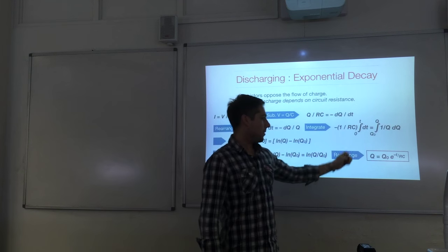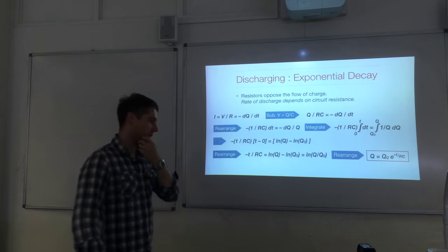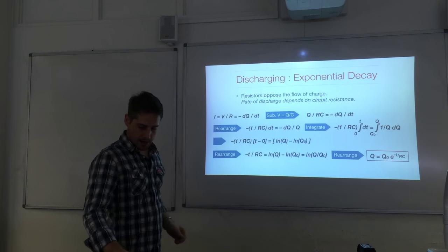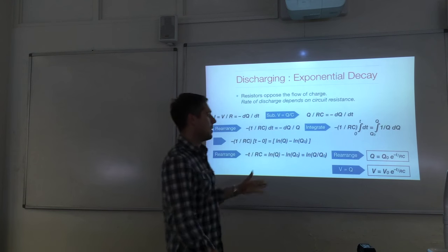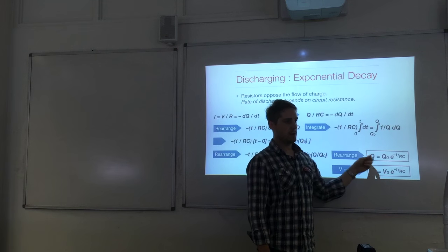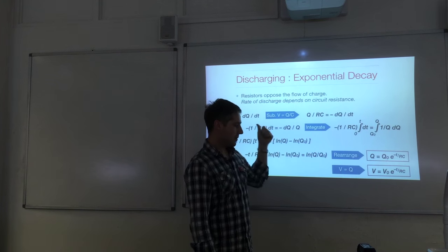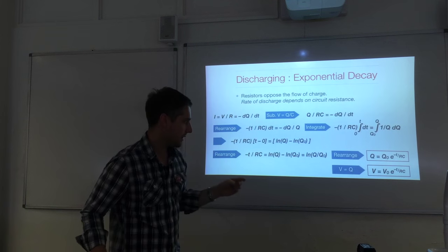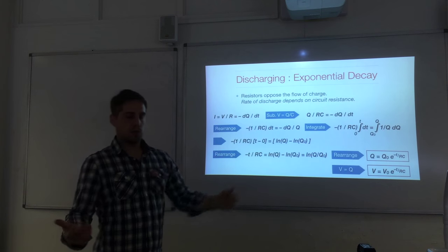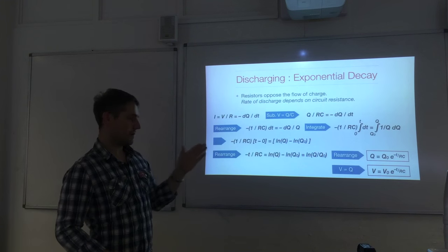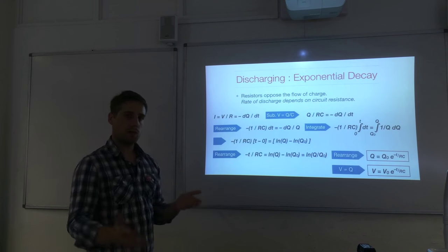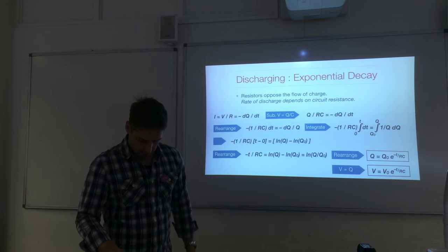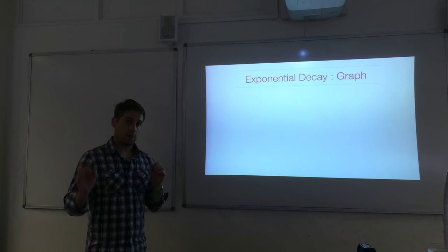Because V is proportional to Q, substituting Q equals CV gives V equals V₀ times e to the minus T over RC. This is useful because voltage is a much more practical quantity for capacitor circuits and is easy to measure directly. You can also express the same form for current: I equals I₀ times e to the minus T over RC.